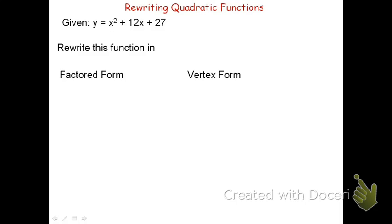We're going to start with an example that's written in standard form. This is the form y equals ax squared plus bx plus c. We're going to take the function y equals x squared plus 12x plus 27 and rewrite it into both factored form and vertex form. We really could start with either method — there's no advantage. I'm going to start with the factored form.